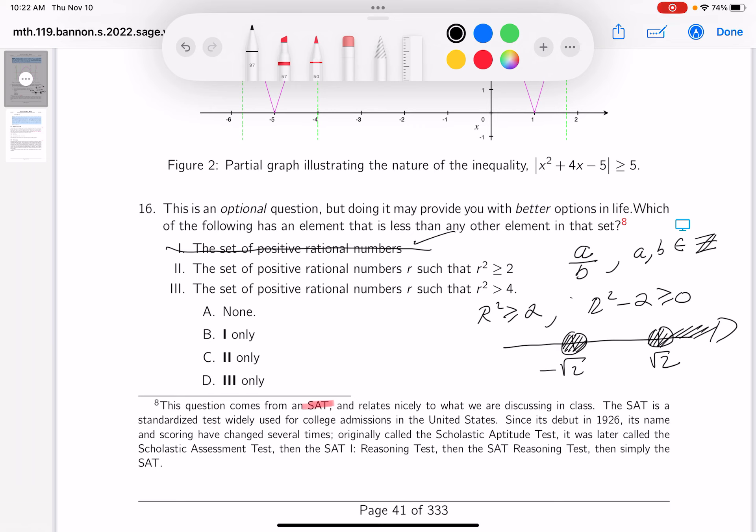Go below minus root two, like minus three, plug it in. It would turn out to be positive. So I got an interval for this one now. For two, the interval is going to be minus infinity up to minus root two, union root two off to infinity. Again, there's no element in that set that's smaller than all other elements. So this one gets crossed off.